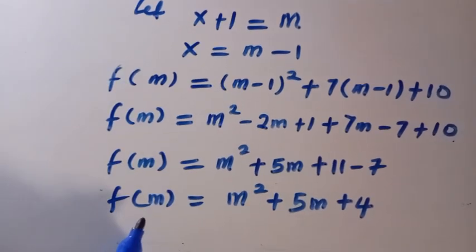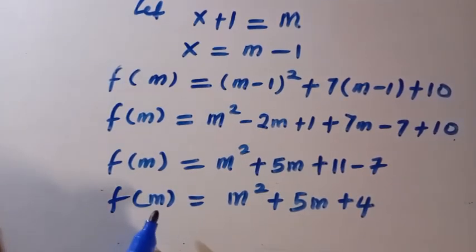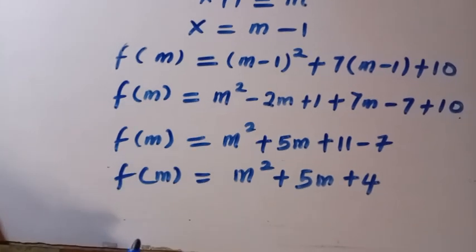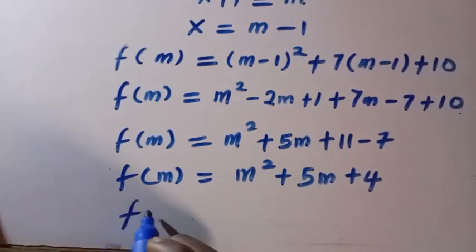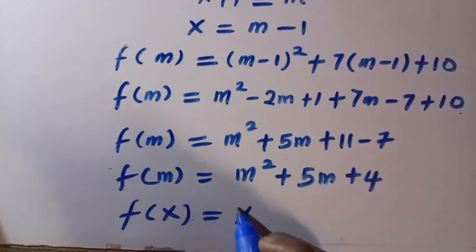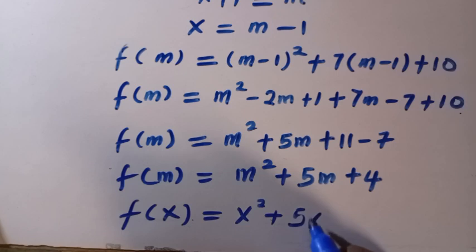So from here, we have f of m equals m squared plus 5m, then here is plus, when we take 7 out of 11, we have 4. Then we need to find f of x, not f of m. So, we have to replace m with x. Then, we have f of x equals x squared plus 5x plus 4.